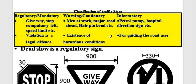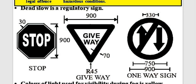Classification of traffic signs: Regulatory (mandatory) signs include give way, stop, speed limit — violation of these is a legal offense. Warning signs indicate hazardous conditions ahead such as curves, narrow bridges, etc. Informatory signs provide directions to hospitals, destinations, and guide road users. The stop sign is octagonal in shape; the give way sign is an inverted triangular or circular shape.